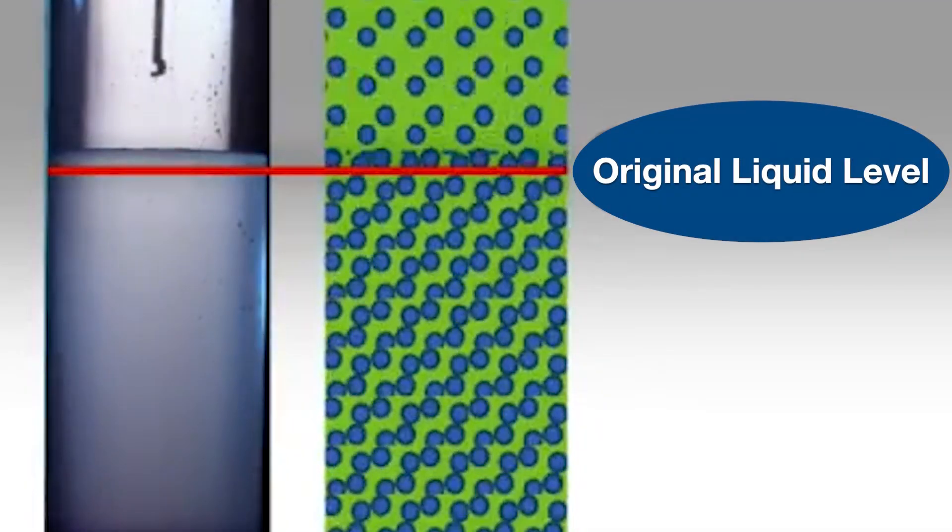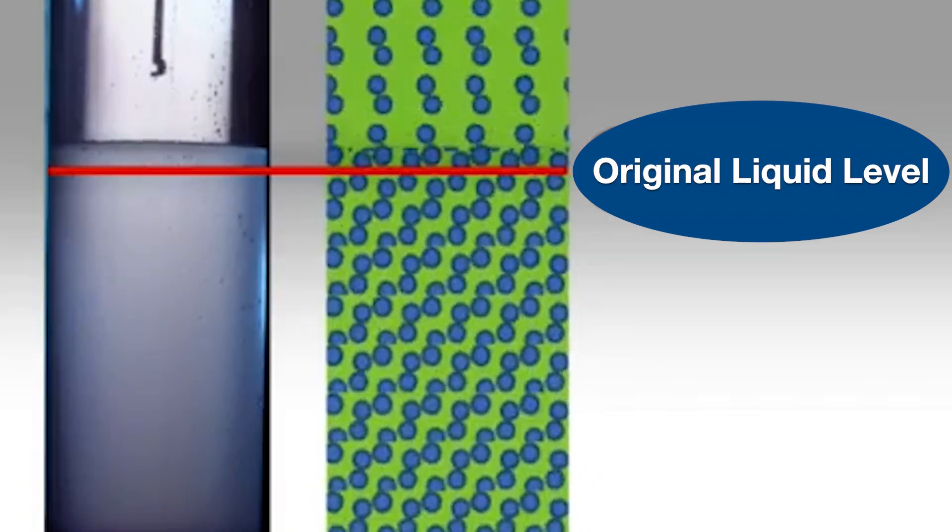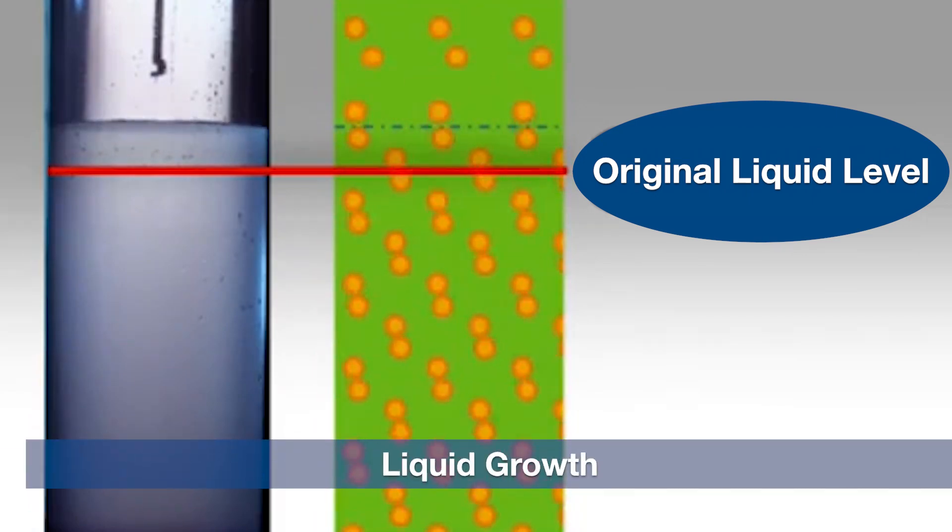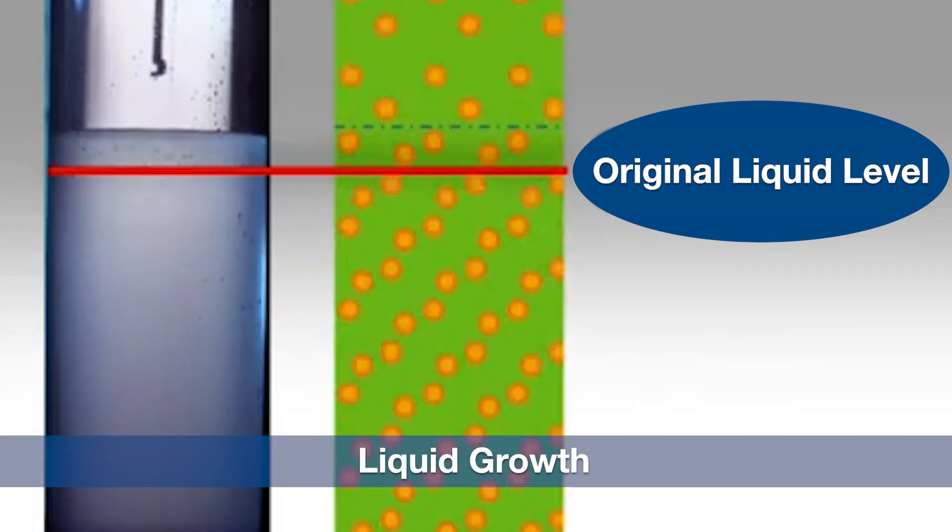If the energy in this system is increased and the system is to remain in equilibrium, the liquid molecules require a larger space for their motion. This larger space reduces the molecular density of the liquid, and we observe liquid growth.